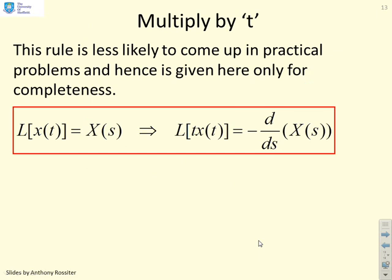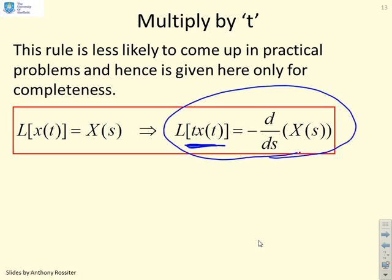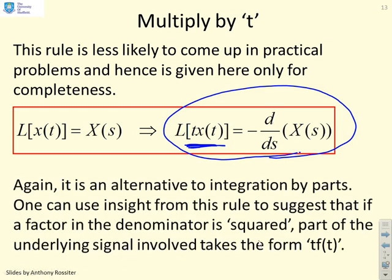What happens if you need to multiply a function by t? We've covered multiplying by an exponential. If you want to find the Laplace of t · x(t), there is a formula for that. The Laplace of t · x(t) can be deduced by computing −d/ds of X(s), where X(s) is the Laplace of x(t). This is included for completeness, though it doesn't come up particularly often.